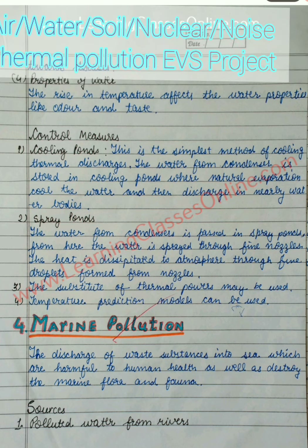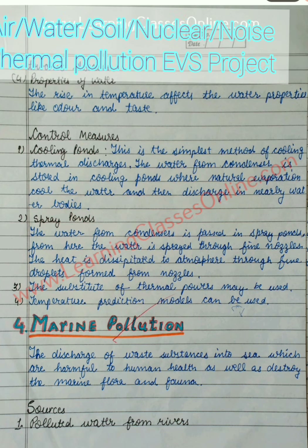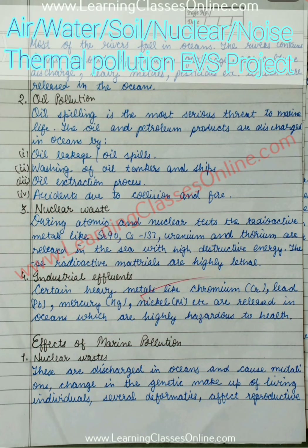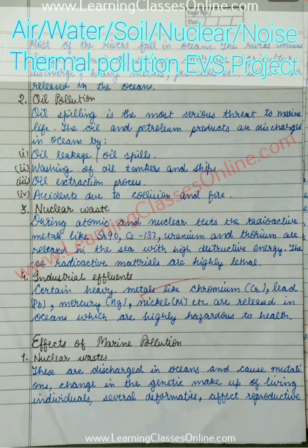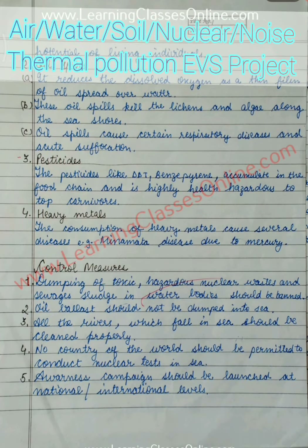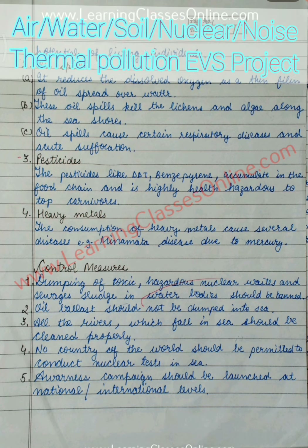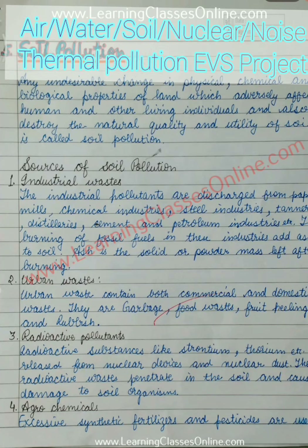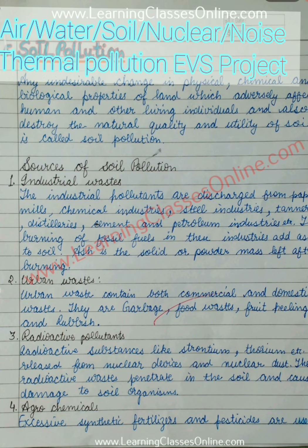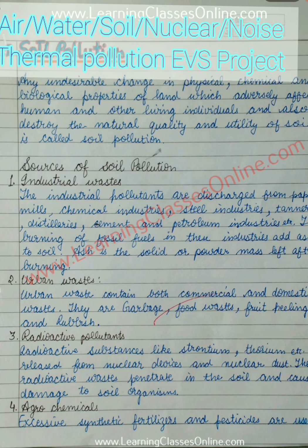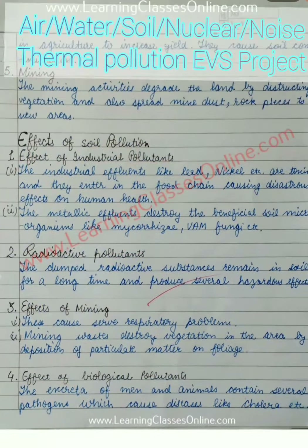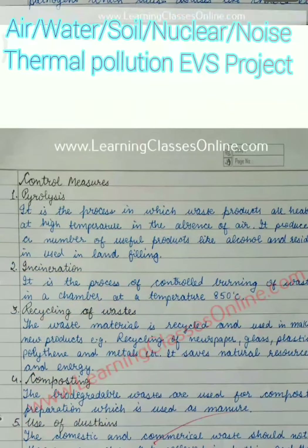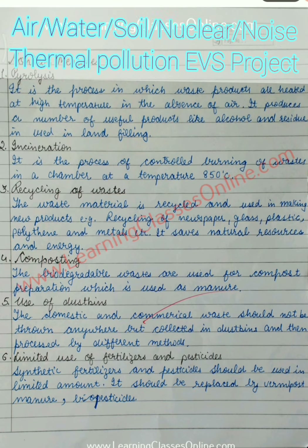After that we have another topic, which is marine pollution. If you have a separate topic based on marine pollution, you can use this — like nuclear waste, industrial effluents, and effects of marine pollution. If you have soil pollution as your topic, then you can write the effects of soil pollution and the control measures regarding soil pollution.